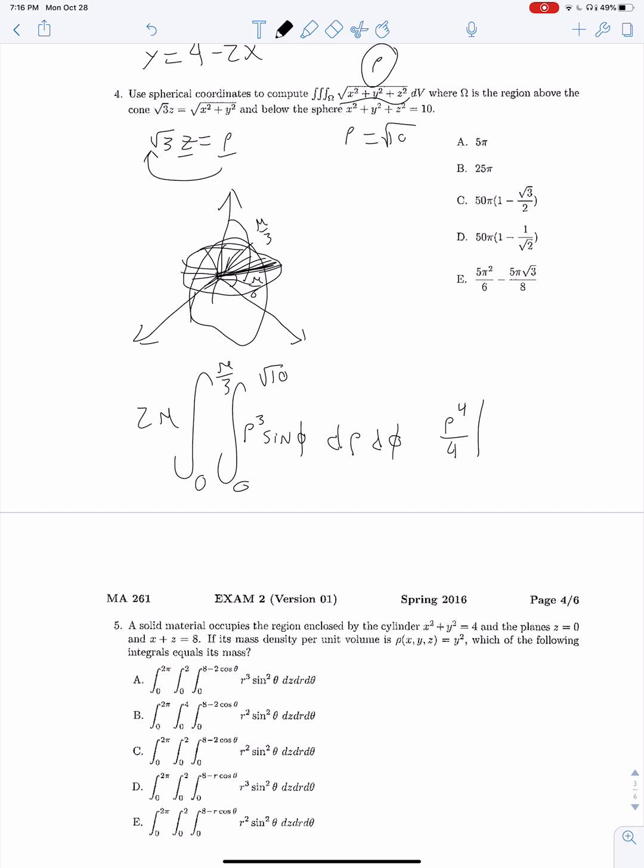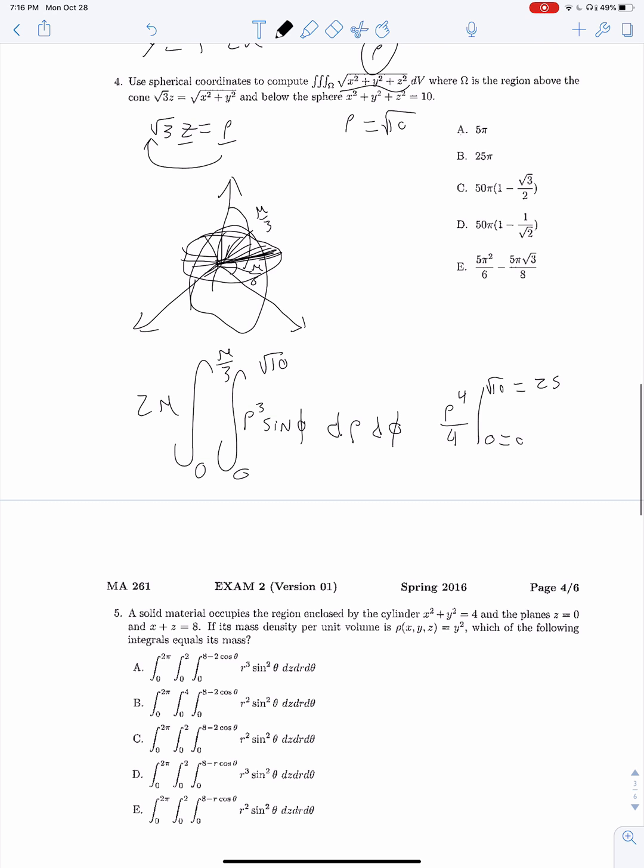Rho to the fourth over 4 on 0 to root 10 is going to be 100 over 4, which is 25. So 50 pi integral from 0 to pi over 3 sine phi d phi. The integral of sine phi is negative cosine phi on 0 to pi over 3. This gives us 1 half for that part. We bring it over here, multiply by 50 pi, and we get 25 pi.